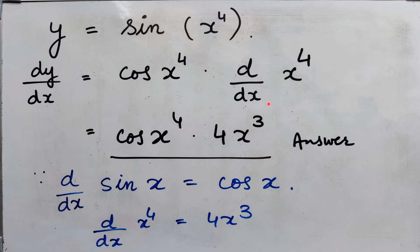It will be multiplied by d/dx of x⁴. Now cos(x⁴) stays as it is. The derivative of x⁴ — using the formula d/dx of xⁿ = n·xⁿ⁻¹ — the derivative of x⁴ will be 4x³. So the solution for y = sin(x⁴) is cos(x⁴) multiplied by 4x³.